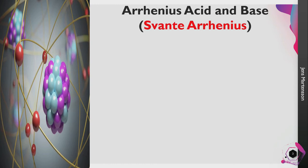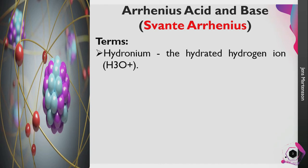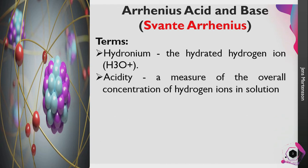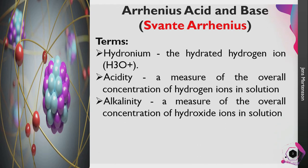The first definition we are going to talk about is the Arrhenius acid and bases, a definition given to us by Vante Arrhenius. Before we go to the discussion, let us familiarize ourselves with these key terms. First is hydronium, which is the hydrated hydrogen ion with a chemical formula of H₃O⁺. We also have acidity, which is a measure of the overall concentration of hydrogen ions in solution, and alkalinity, which is a measure of the overall concentration of hydroxide ions in solution.